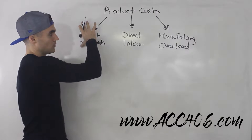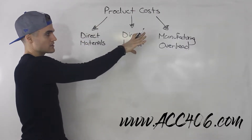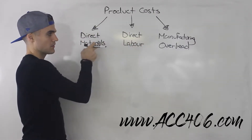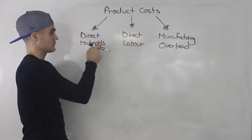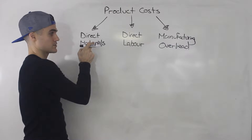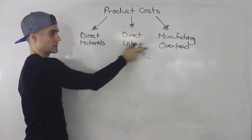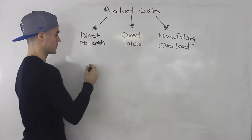So I wrote out the product costs here. Remember we had the three different types: direct materials, direct labor, and manufacturing overhead.